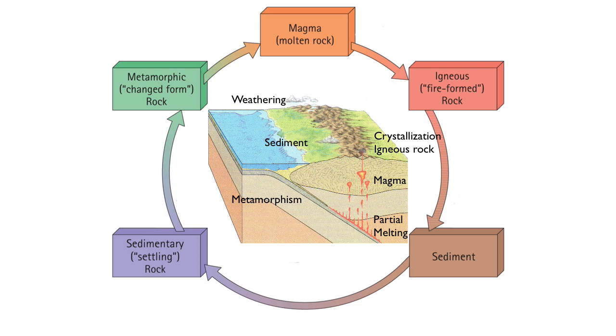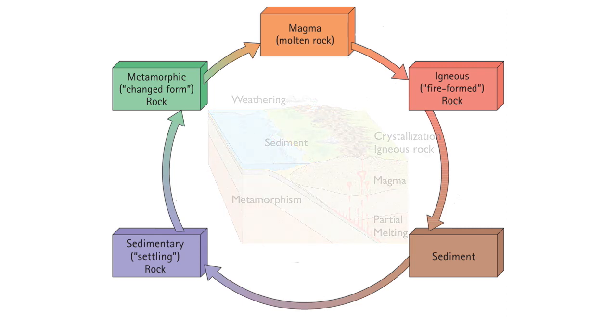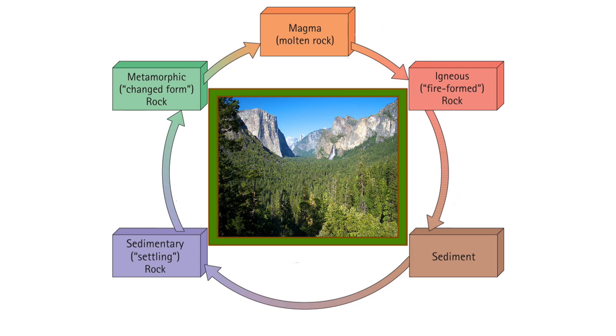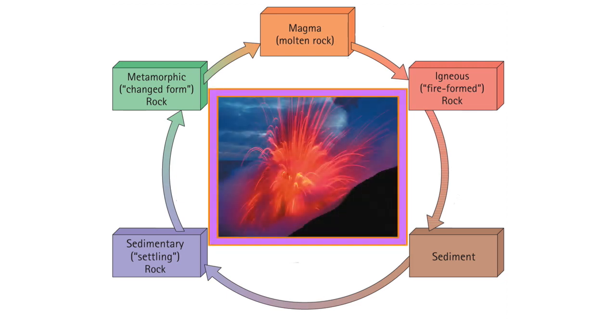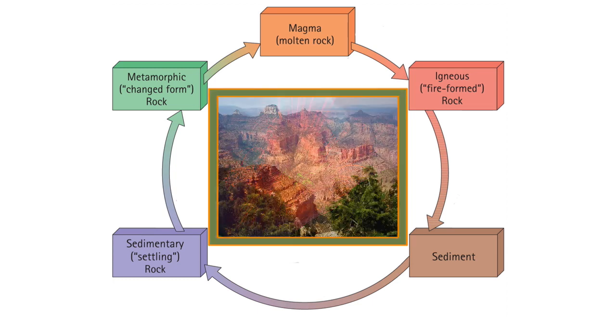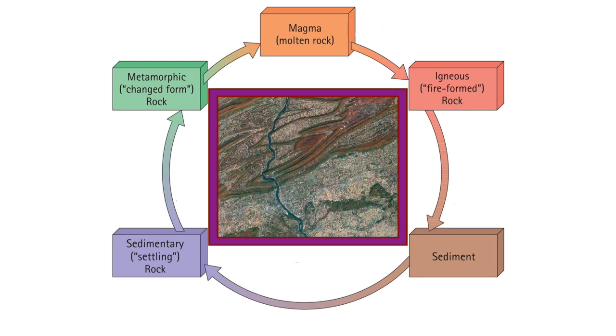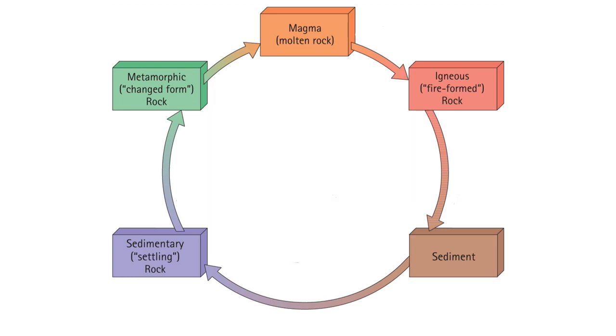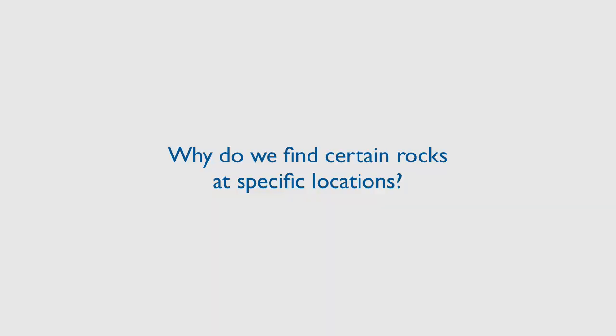But how do these processes occur? Why do we find the various rocks where we do? For example, why do we find granitic type rocks in the Sierra Nevada mountains and basaltic rock on the Hawaiian islands? Why do we find layered sedimentary rock in the Grand Canyon, and why are metamorphic rocks so common in the Appalachian mountains? These are all great questions, and we will investigate this more when we study plate tectonics. Onward.